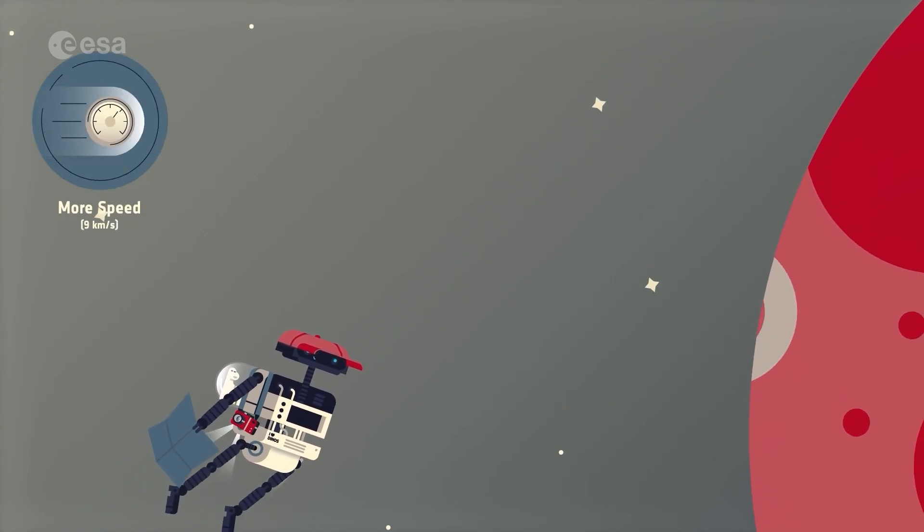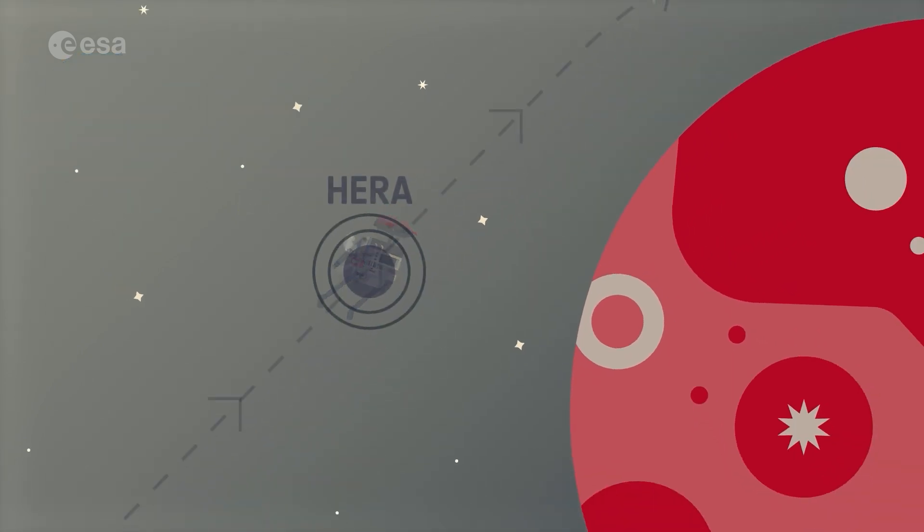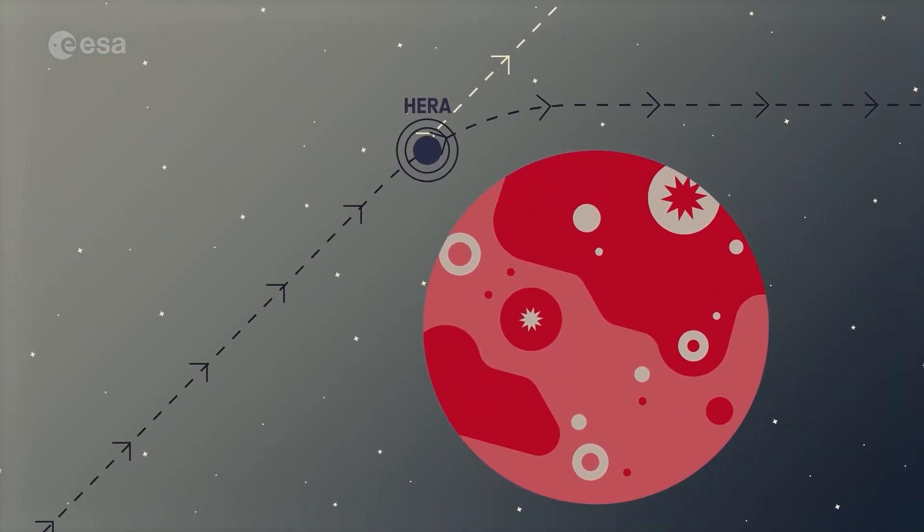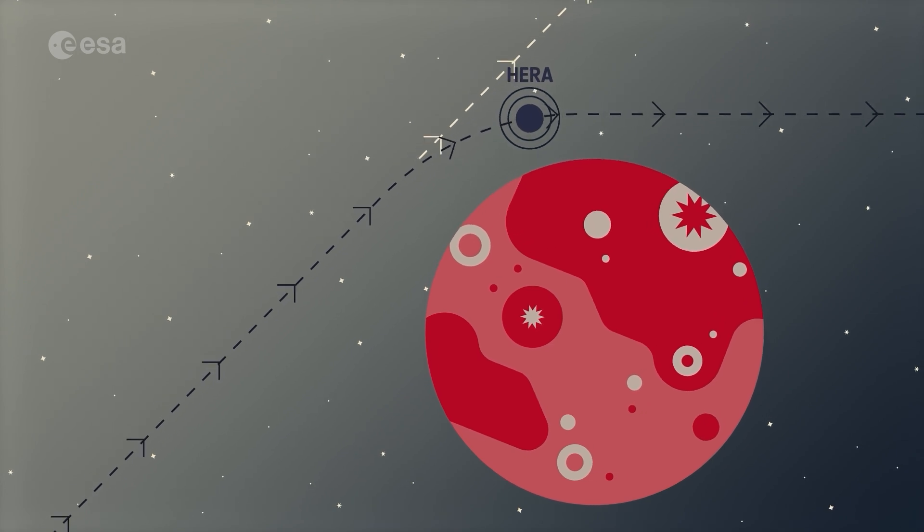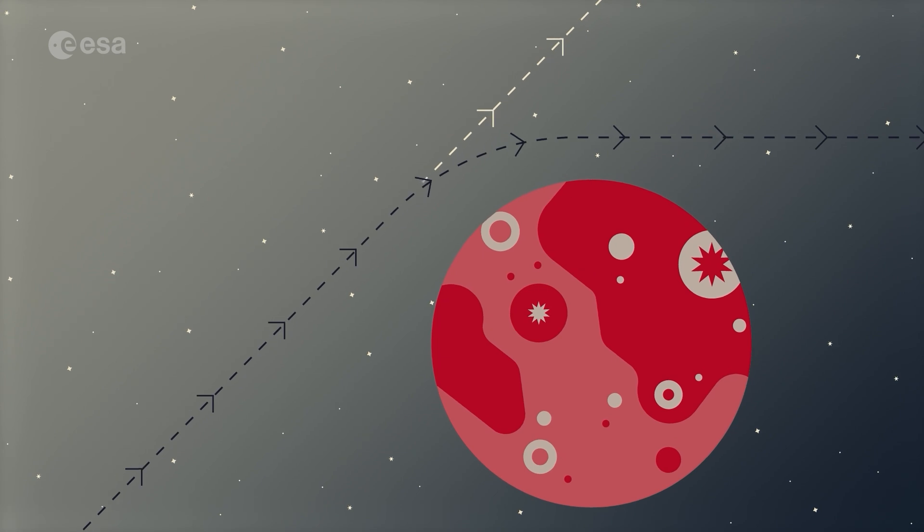But the main event is swooping close to the planet, stealing a bit of its orbital energy to boost her speed without using any extra fuel. Careening around Mars at 9 km per second, the red planet will be like an astronomical roundabout, changing HERA's trajectory and slingshotting her on toward Didymos and Demorphos.